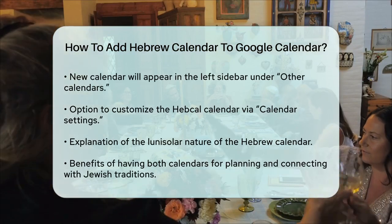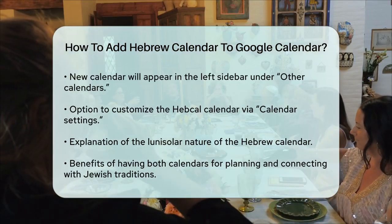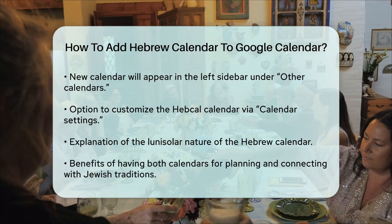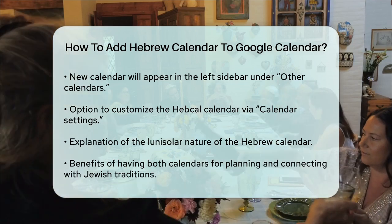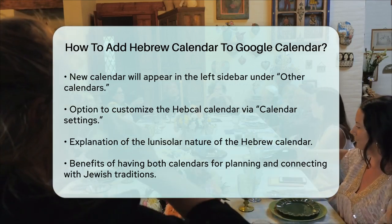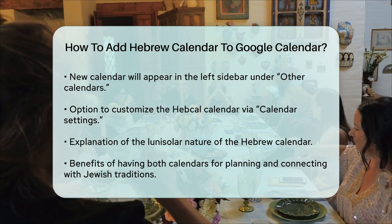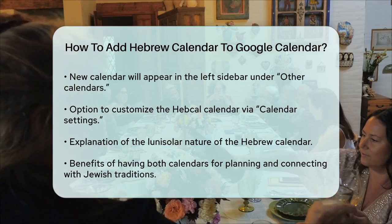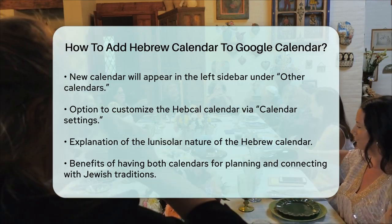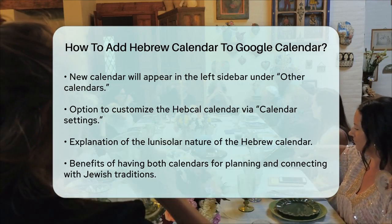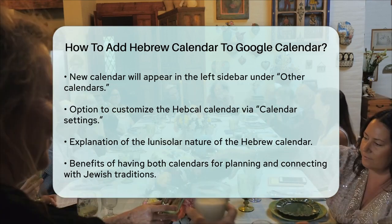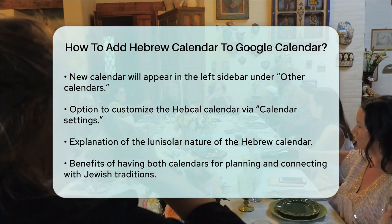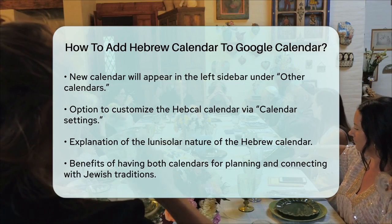Adding the Hebrew calendar can be really helpful, especially if you want to keep track of important Jewish holidays and dates. The Hebrew calendar is lunisolar, meaning it bases its months on lunar cycles and its years on solar cycles, so it's a bit different from the Gregorian calendar you're used to. By following these steps, you'll be able to see both the Gregorian and Hebrew dates on your Google Calendar, making it easier to plan and stay connected with Jewish traditions and holidays.